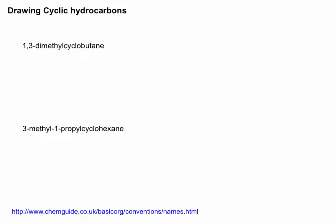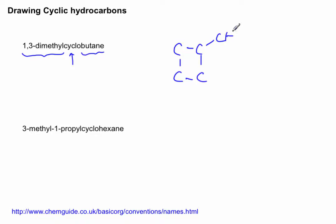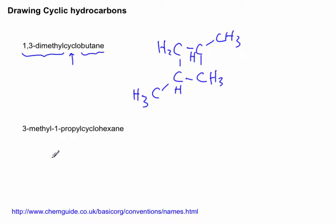Drawing cyclopentane — it's all in the name. We have two methyl branches on carbon one and carbon three. It's cyclic, so it's a ring, and the ring length is butane — four carbons. So counting one, two, three, four — there's the cyclobutane ring. Carbon one has a methyl branch, carbon three has a methyl branch, and I attach hydrogens to satisfy the carbon bonding. There's the diagram of 1,3-dimethylcyclobutane.